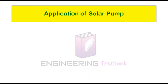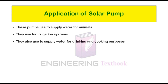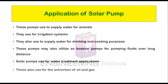Solar pumps are used to supply water for animals. They are used for irrigation systems. They are also used to supply water for drinking and cooking purposes. These pumps may also be utilized as booster pumps for pumping fluids over long distances. Solar pumps are used for water treatment applications and also for extraction of oil and gas.